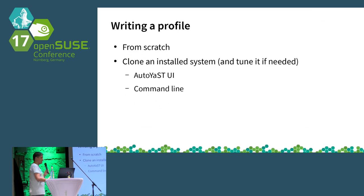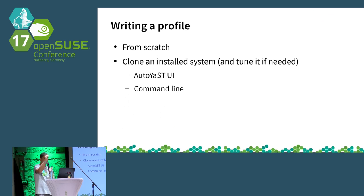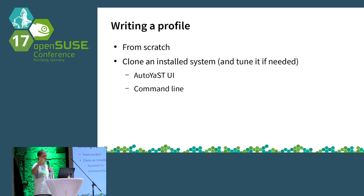When you want to write a profile, you can create one from scratch, copy and paste from the documentation, copy from other profiles, or write your own. You also have an AutoYaST UI that allows you to inspect the running system, tweak parameters, and generate a profile from your installed system — we call that 'clone system.' You also have a command line that creates a configuration resembling your running system, or you can create your profile programmatically and feed it to AutoYaST.